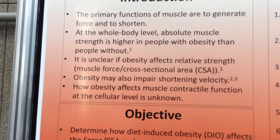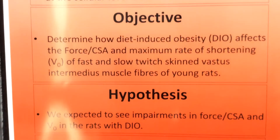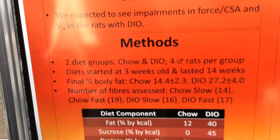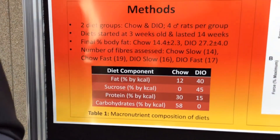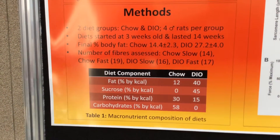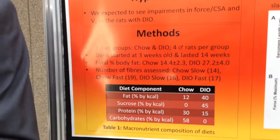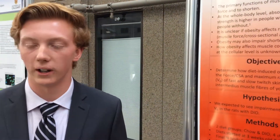For our study, we used single fibers from the vastus intermedius muscle, and young male rats from two diet groups: a diet-induced obesity group and a normal chow group. For our experiment, we began by extracting a single fiber from a fascicle and mounting it on an apparatus. We then adjusted the length to 2.4 microns via laser diffraction.